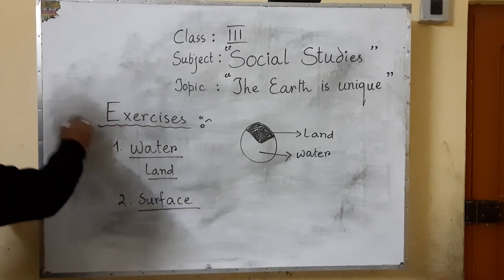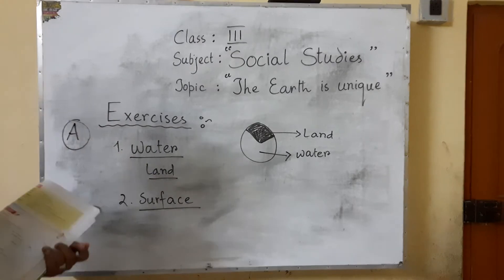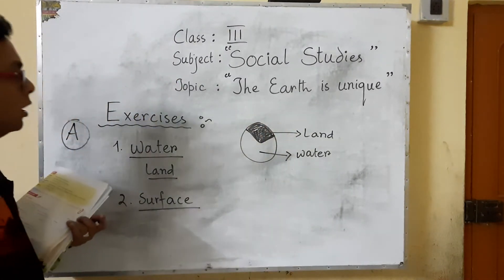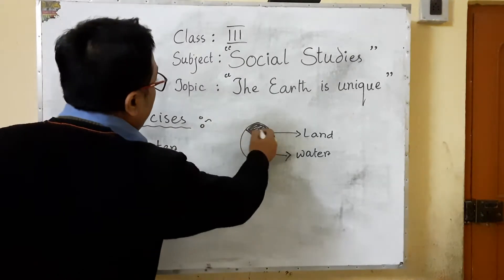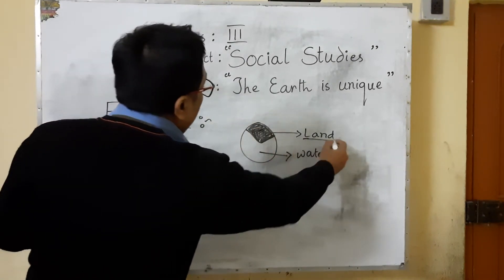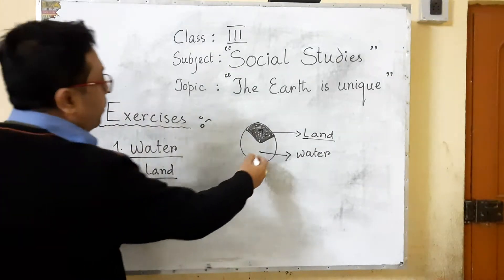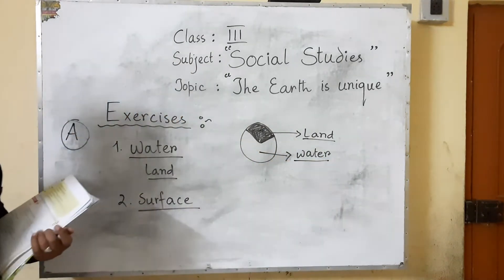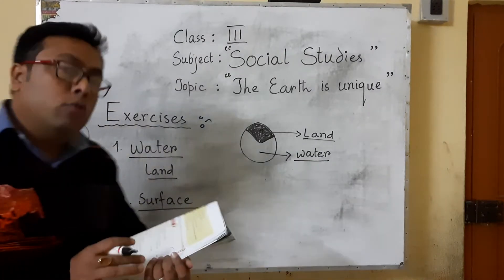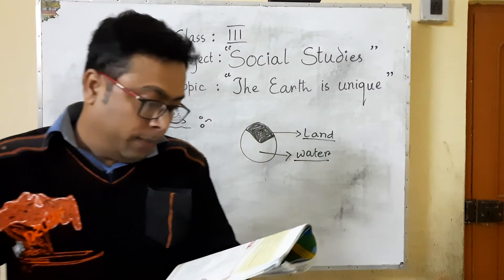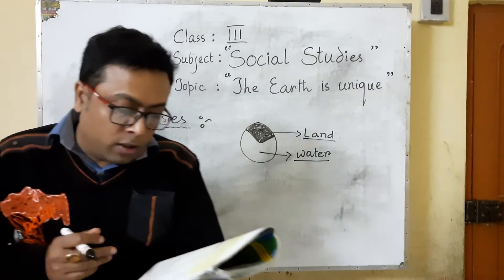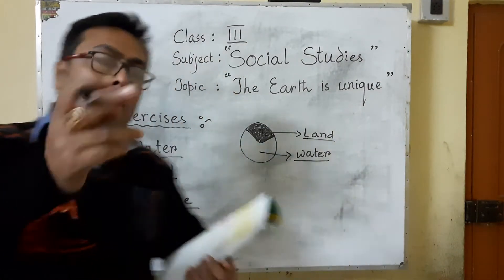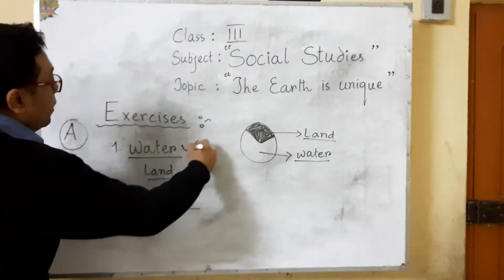From exercise eight there is a diagram. Suppose this is the Earth — one fourth portion of the Earth is land and three fourth portion of the Earth is water. For the fill in the blanks: the surface of the Earth is almost three parts water and about one part land.